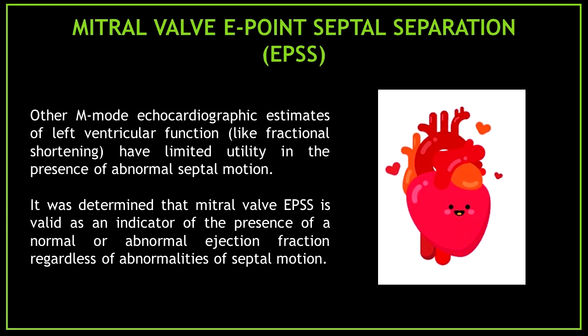Other M-mode echocardiographic estimates of left ventricular function, like fractional shortening, have limited utility in the presence of abnormal septal motion. What determines that mitral valve E-point septal separation is valid as an indicator of the presence of a normal or abnormal ejection fraction, regardless of abnormalities of septal motion?